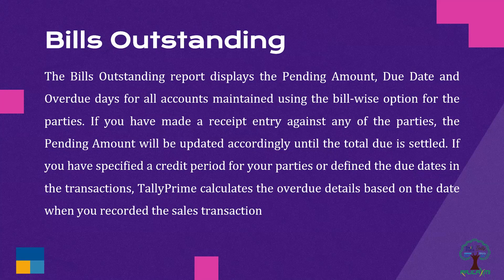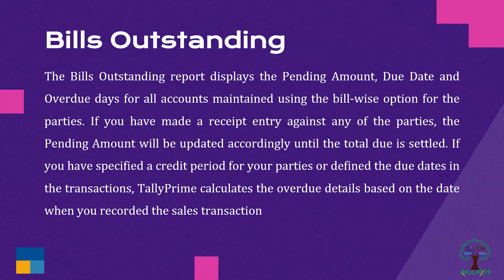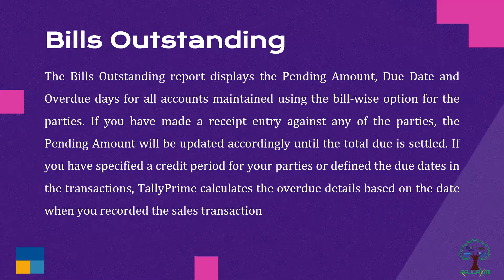For all accounts maintained using the bill-wise option, if you have made a receipt entry against any of the parties, the pending amount will be updated accordingly until the total due is settled. If you have specified a credit period for your parties or defined due dates in the transaction, Tally Prime calculates the overdue details based on the date when you recorded the sales transactions.